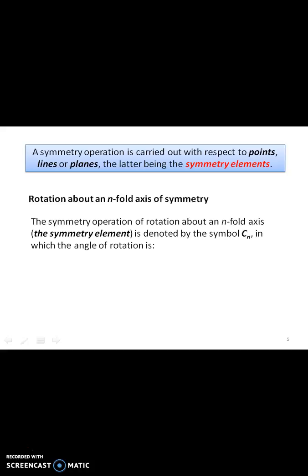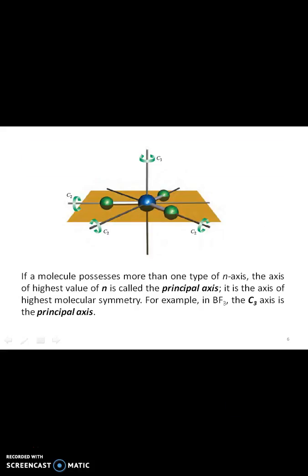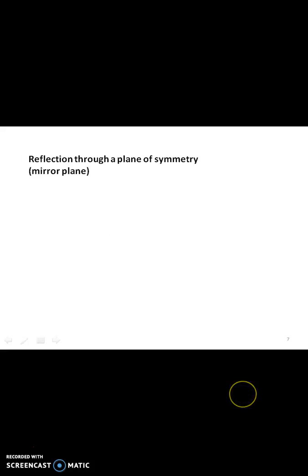Next comes the symmetry operations which can be carried out with respect to points, lines, or planes, and we call it symmetry elements. Rotation about n-fold axis of symmetry is denoted by the symbol Cn. The symmetry operation of rotation about n-fold axis in which the angle of rotation is given by the formula Cn = 360°/n, where n is an integer. Consider the molecule where we can see the rotational axis.